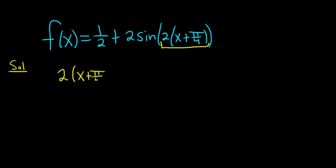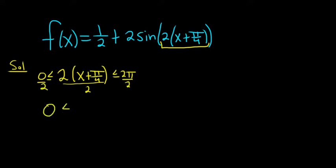So let's do that. Here we have 2π on one side and 0 on the other. Then you want to solve for x. So if we divide everything by 2 — divide by 2, divide by 2, divide by 2 — you end up with 0 ≤ x + π/4 ≤ π.